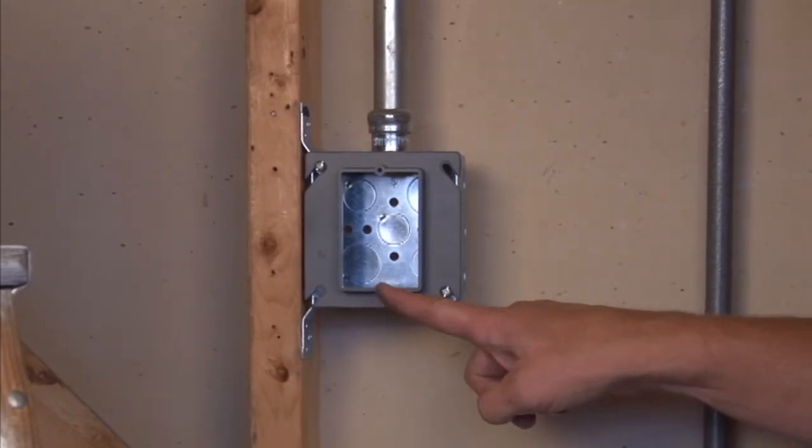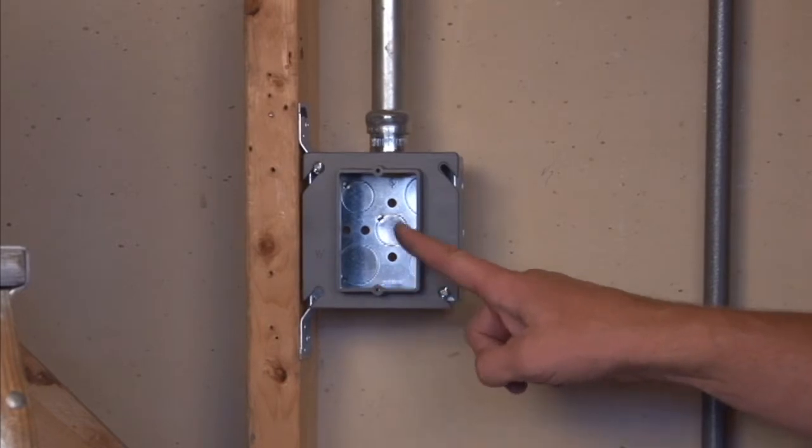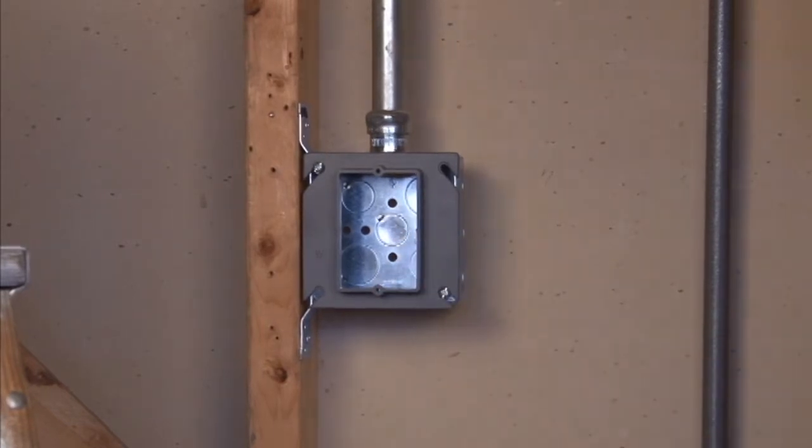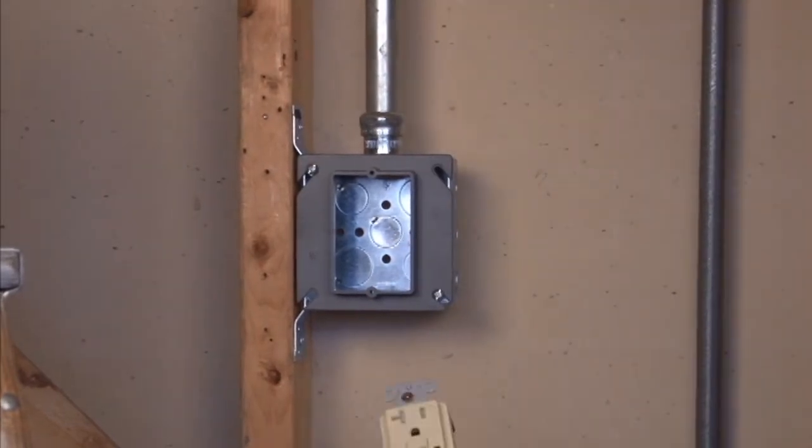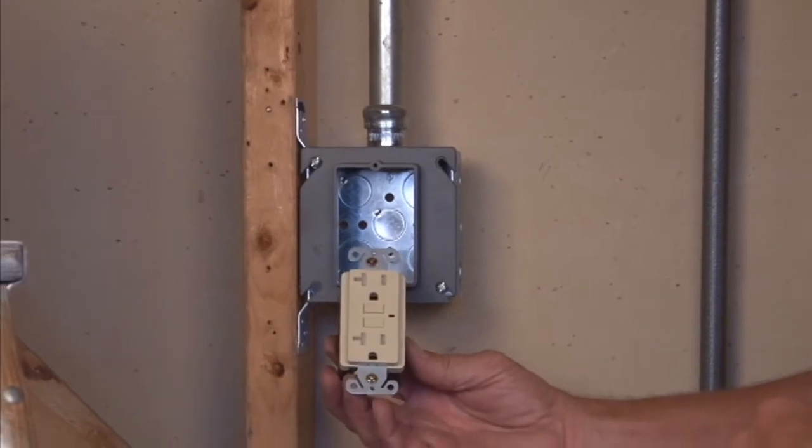Every Garvin single gang plaster ring comes with two 632 tap holes to match any electrical plug or outlet.